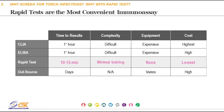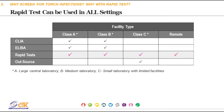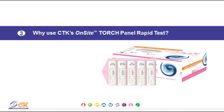Compared to other available screening methods, rapid tests are the most user-friendly, providing faster results, requiring minimal training and equipment, and having the lowest cost. Because of these overall advantages, rapid tests are an accepted methodology for use in almost all types of facilities. Since 2005, CTK has manufactured individual TORCH tests, and due to market demand and customer input, developed and launched a TORCH panel in 2016.